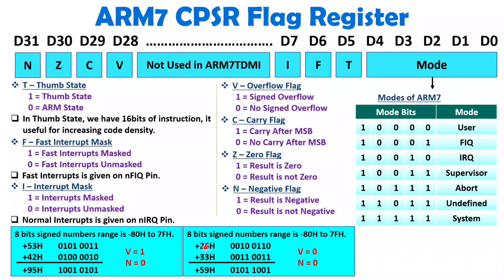For another example, consider 8-bit signed addition of 26h + 33h. The result is 59h. The answer is positive, so N equals 0, and there is no overflow because 59h is within the range of -80h to 7Fh. So in short, ARM7's N flag is not simply based on the D7 MSB bit — ARM7 practically calculates whether the operation results in a positive or negative value, which is why it is better.